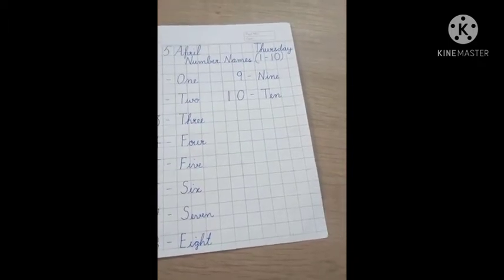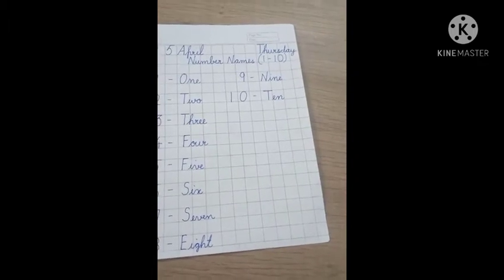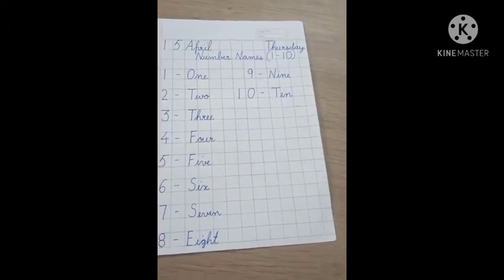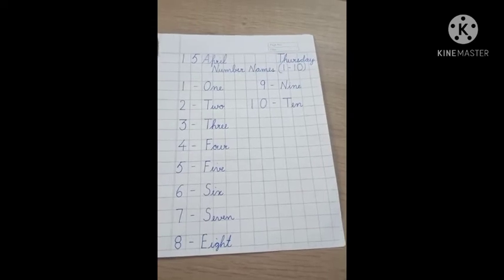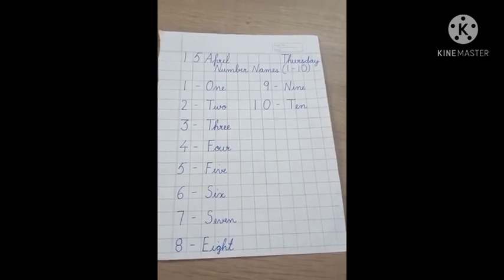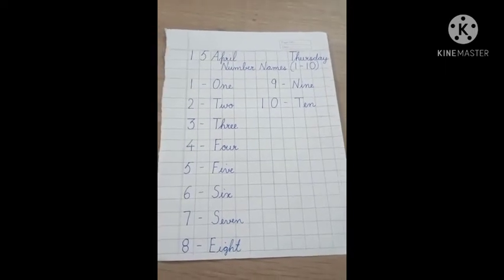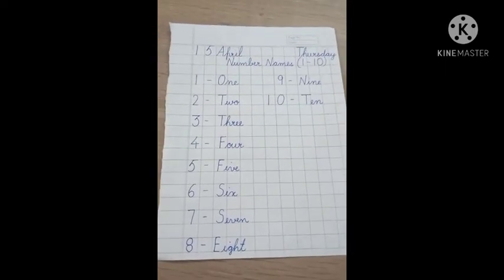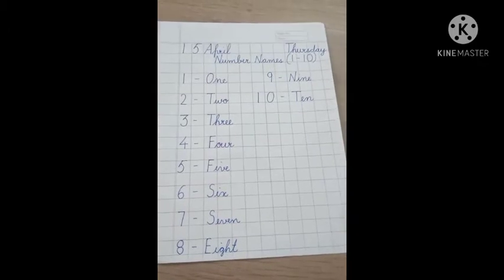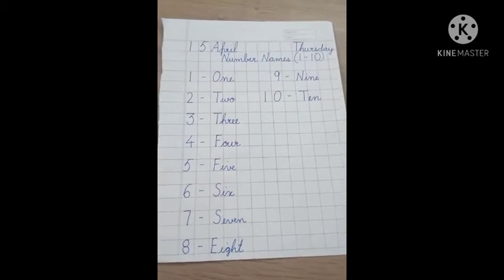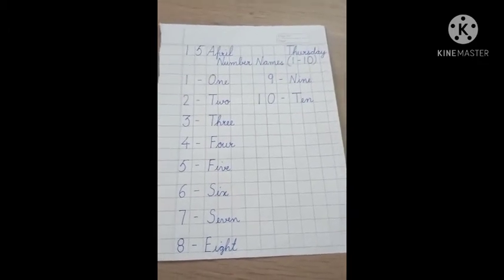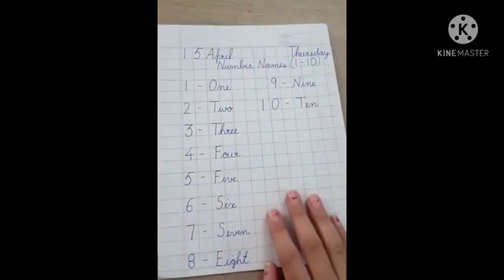It is to be instructed that everyone will write in a very, very beautiful handwriting. Sabko bahut sundar aur beautiful handwriting mein likhna hai. Jaisi ki ma'am aapko picture mein aur video mein show kar rahi hai, bilkul vaisi. Following the formations of numbers.